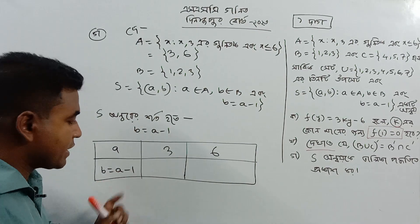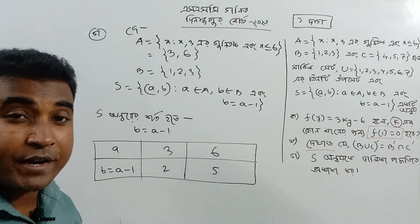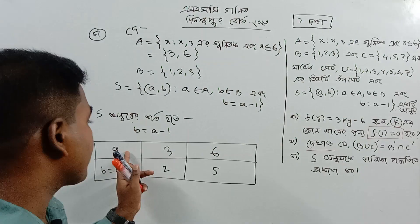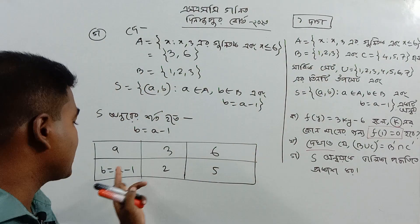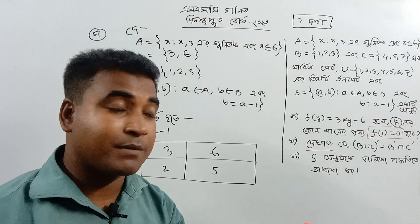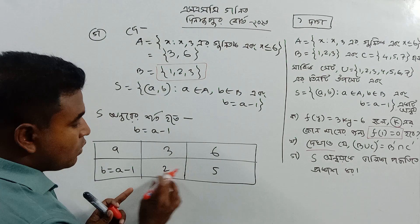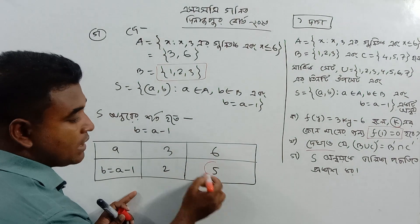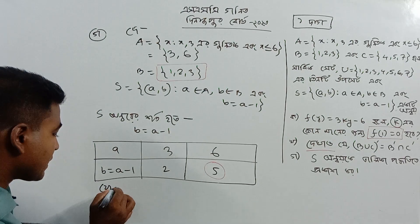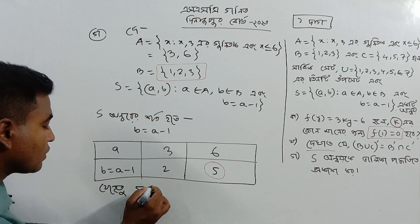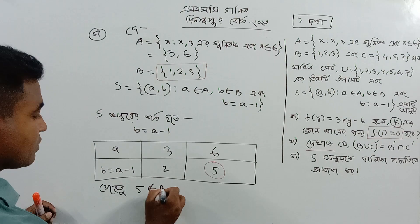The relation R consists of ordered pairs: 3 relates to 3 minus 1 which is 2, and 6 relates to 6 minus 1 which is 5. So B contains {1, 2, 3}. Since 5 does not belong to B, we note that.